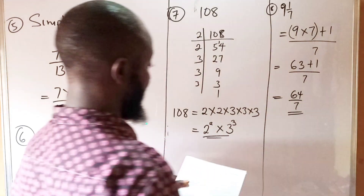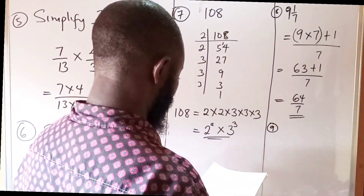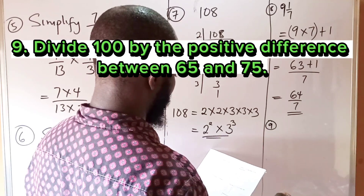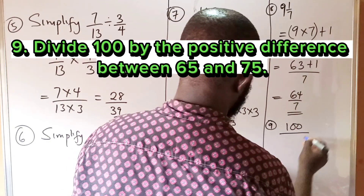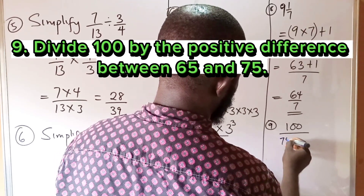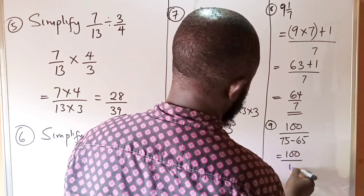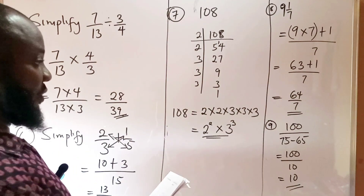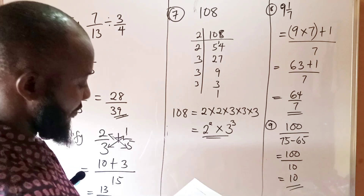Question number nine says divide 100 by the positive difference between 65 and 75. The positive difference is 75 minus 65, which is 10. So we have 100 divided by 10, which gives us 10. This is straightforward, but if you fail to read the question properly you will miss it.